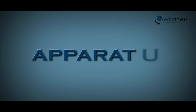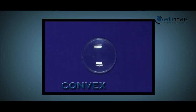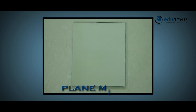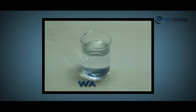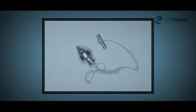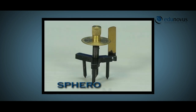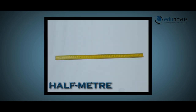The apparatus used in this experiment are a convex lens, a plane mirror, transparent liquid in a beaker, clamp stand with an optical needle, plumb line, sparometer, and half meter scale.